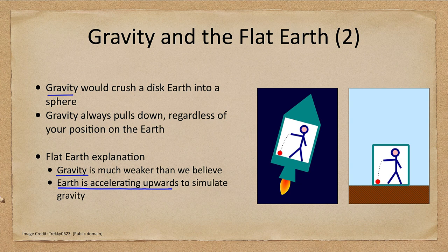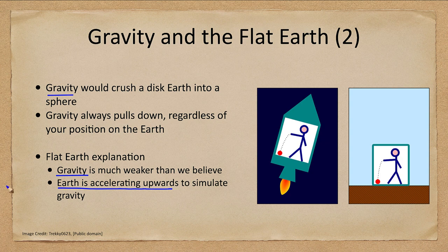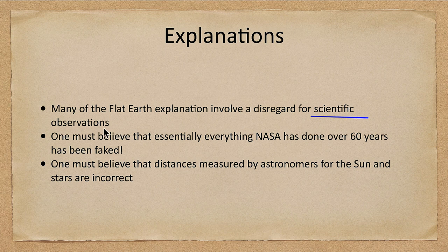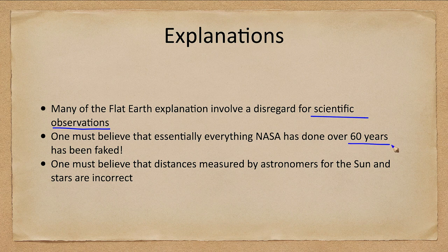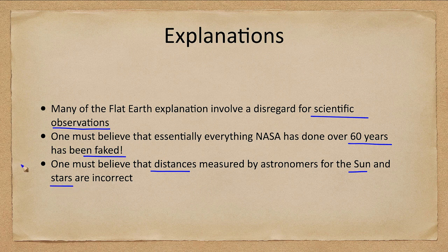How would we be moving this quickly, and how would that affect our observations of the stars? So let's summarize a little bit here. What are some of the explanations? Again, some of them are a complete disregard for scientific observations, ignoring anything that NASA does. We have to say that anything NASA did over the last 60 years has been faked. We also have to believe that the distances that I give you in this class for things like the sun and the stars are wildly incorrect.